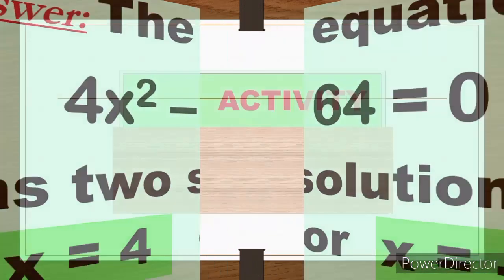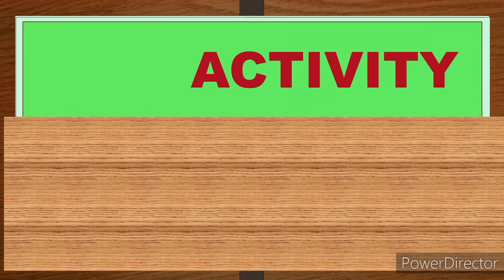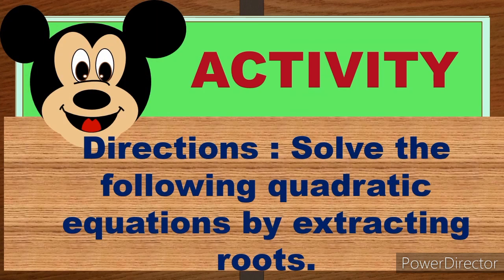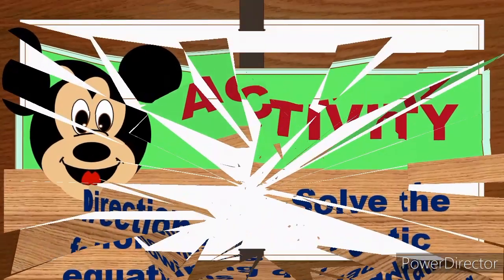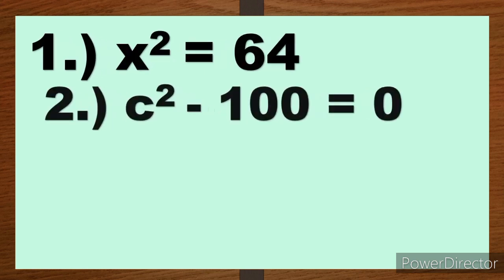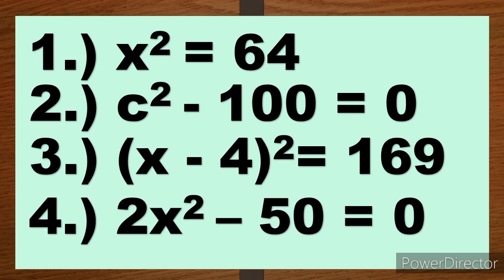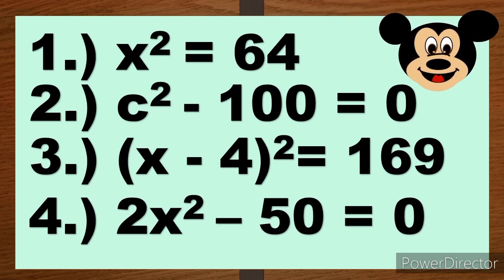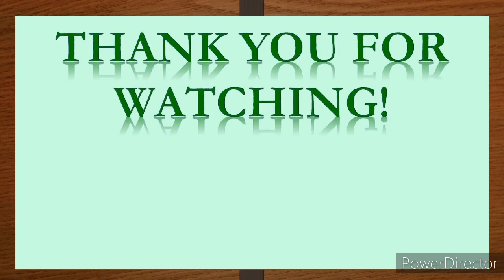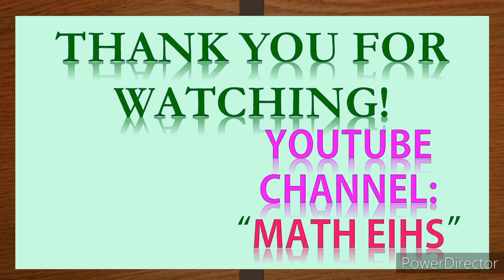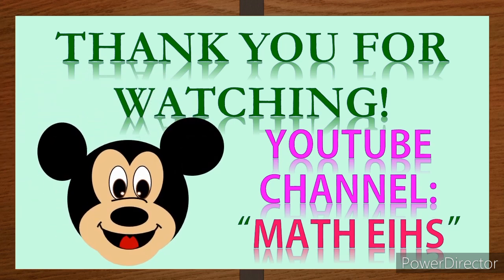I think you're ready for your activity. The direction is: solve the following quadratic equations by extracting roots. Number 1: x² = 64. Number 2: c² - 100 = 0. Number 3: (x - 4)² = 169. Number 4: 2x² - 50 = 0. That's all for now. Thank you for watching and good luck. For comments, suggestions, and clarifications, you can comment in the comment section below.